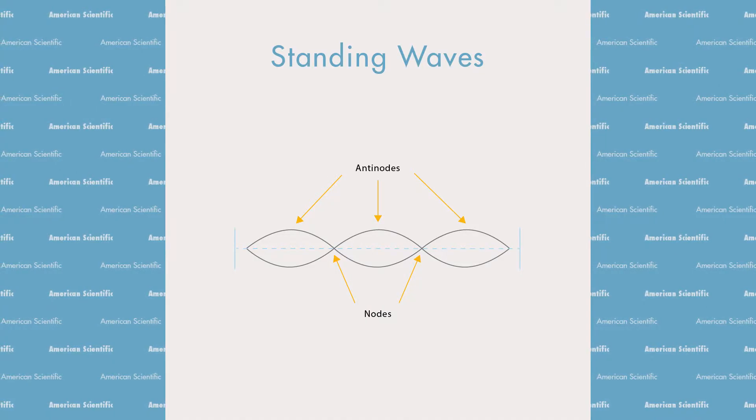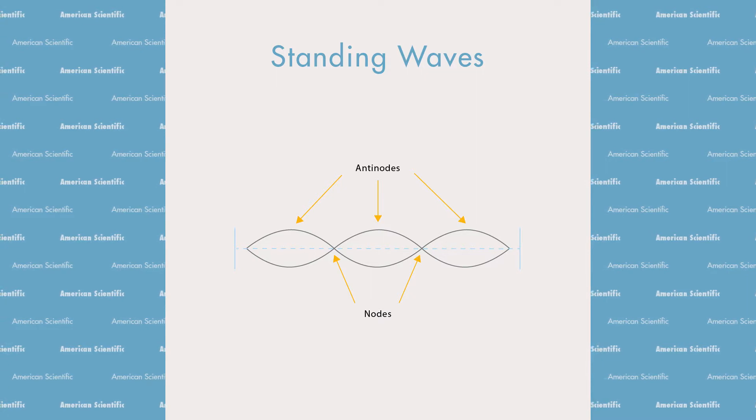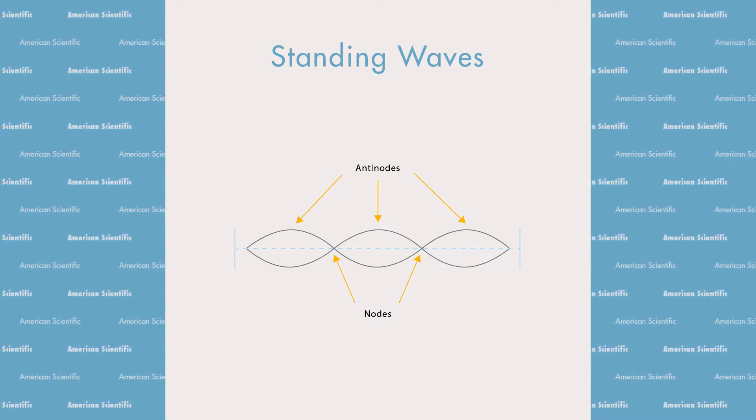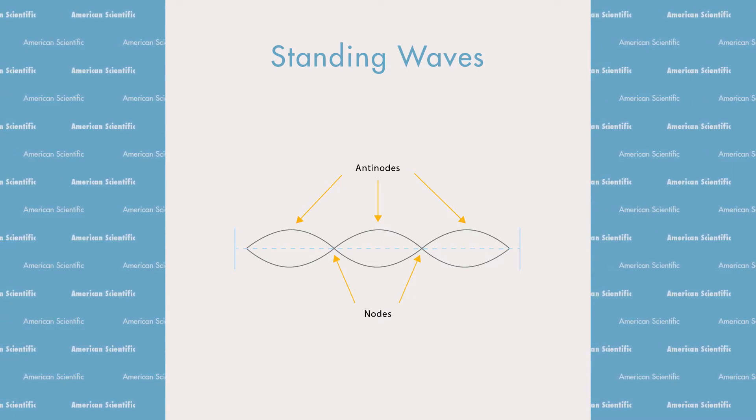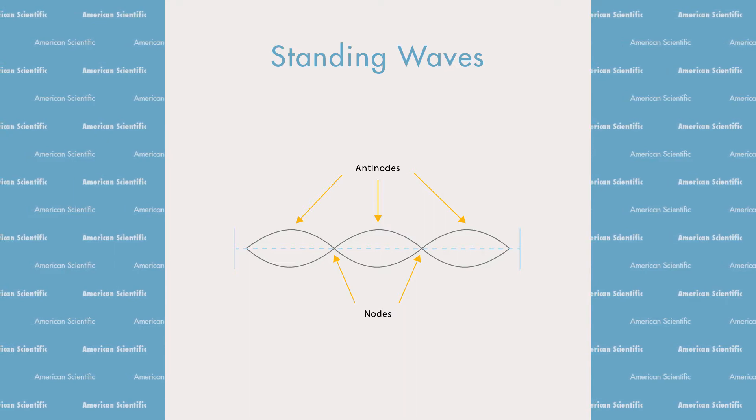An important concept in studying wave behavior are standing waves. A standing wave is formed when the vibrational frequency of the wave source causes reflected waves from one end of the medium to interfere with incident waves from the source. In other words, if the frequency is just right, the reflected waves are in sync with the original wave and the wave looks like it's standing still.